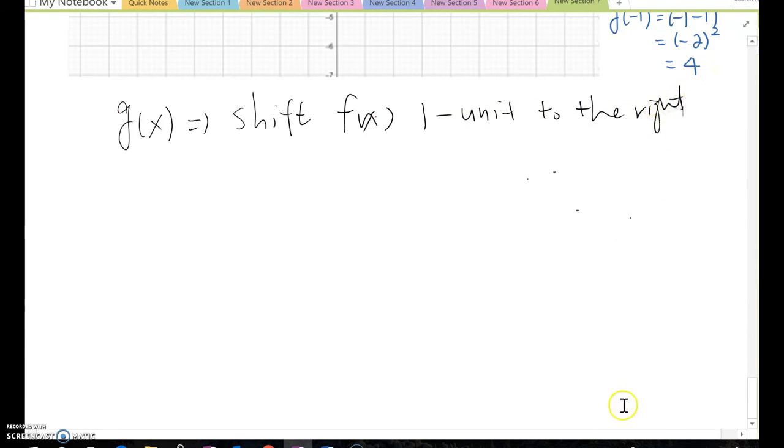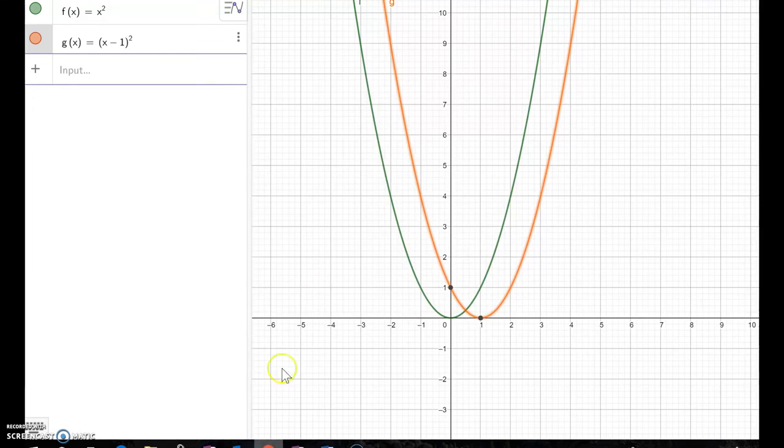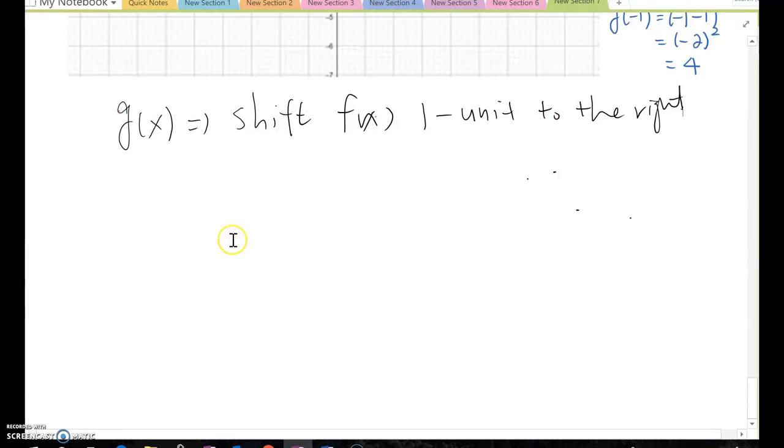So based on this truth, we can say the difference between f(x) and g(x): g(x) shifts f(x) one unit to the right. Let's review again. The green graph shifted one unit to the right. It moved one unit to the right here. Therefore, g(x) shifts f(x) one unit to the right.